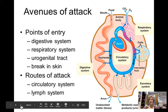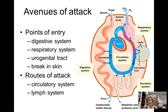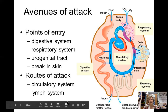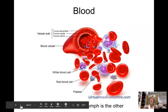Pathogens can get in through our digestive system, respiratory system, urogenital tract, or through a break in our skin. Once inside, they can circulate in our blood or spread through the lymphatic system — another fluid system in the body. The lymphatic system is basically interstitial fluid that collects between cells and is filtered by our lymph nodes. We'll talk more about that in a moment.